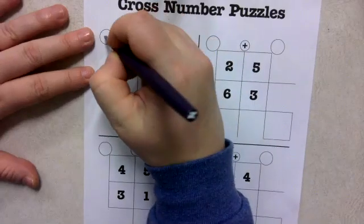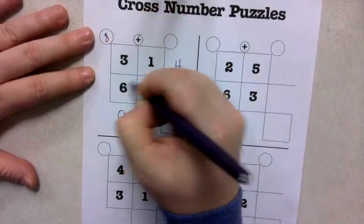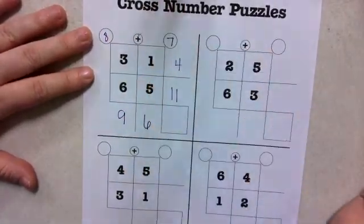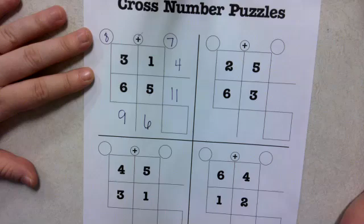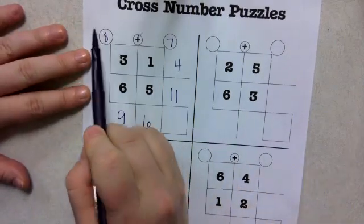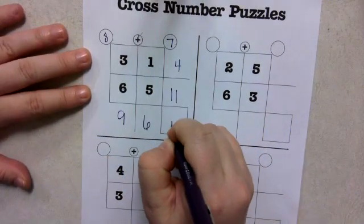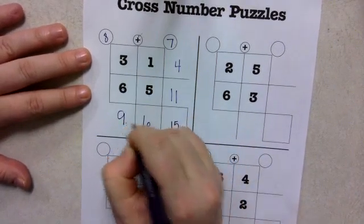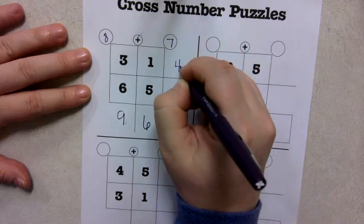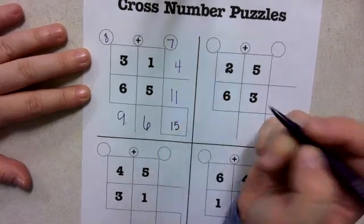5 plus 3 is 8, 6 plus 1 is 7. Now this is how I check to see if I did this correctly. 8 plus 7 is 15, 9 plus 6 is 15, and 4 plus 11 is 15.